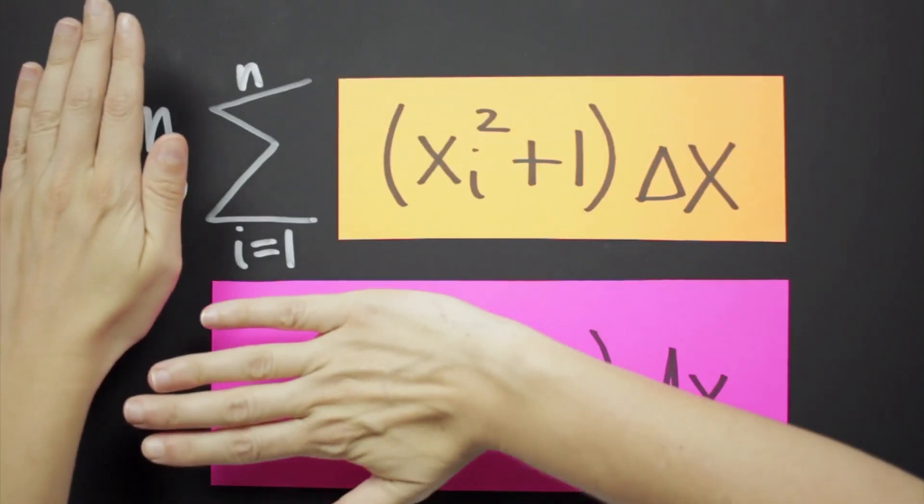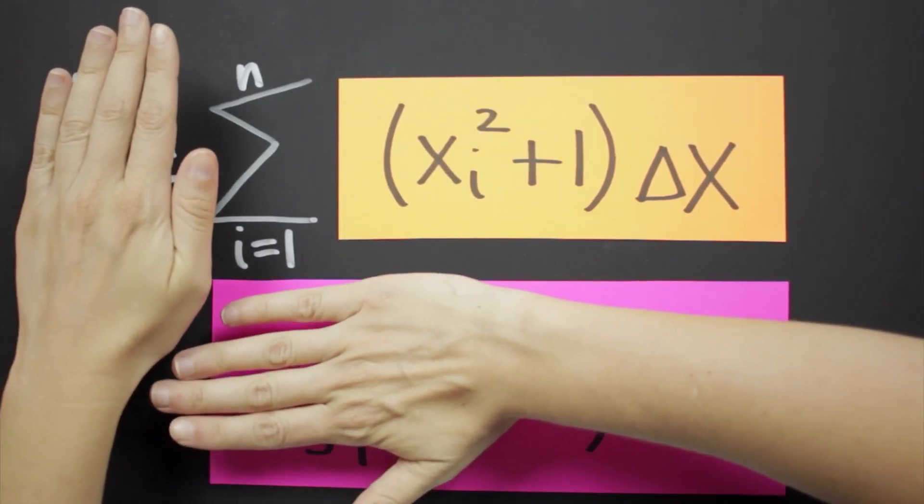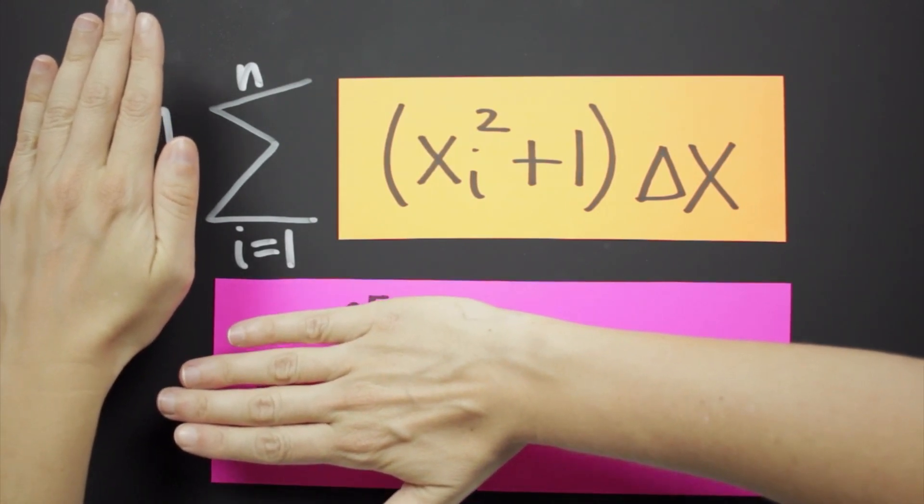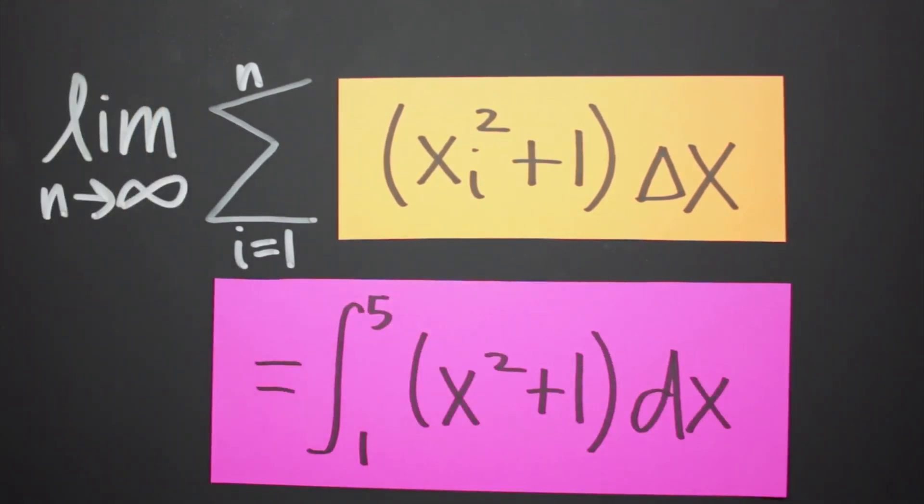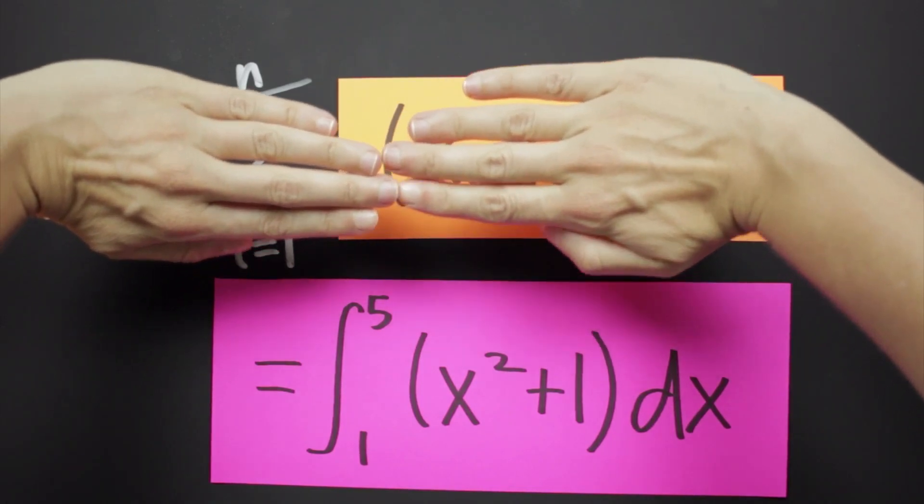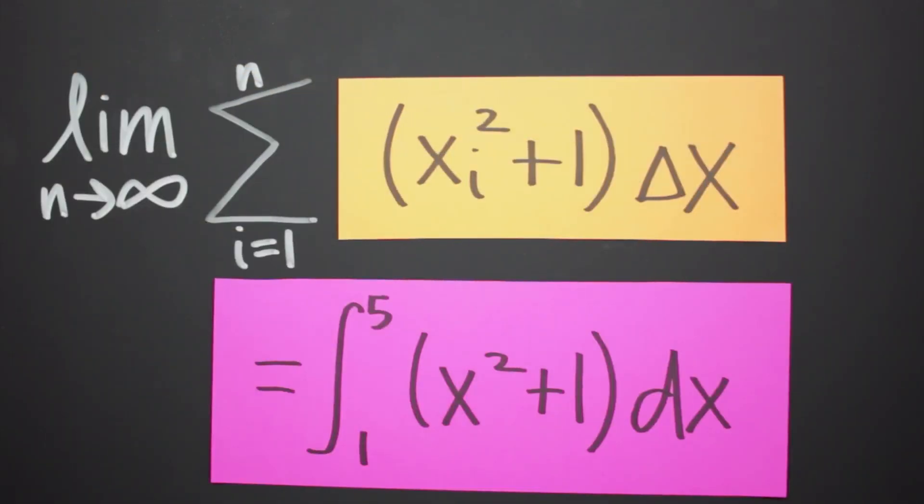This part, if we know the number of rectangles n and the interval ab, is the Riemann sum we use to find an approximation of the area. And this part, if we know the interval ab, is the integral we use to find the exact area.